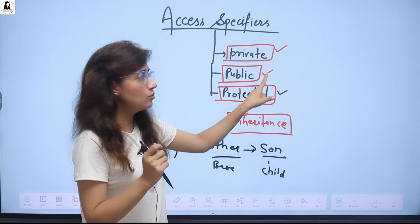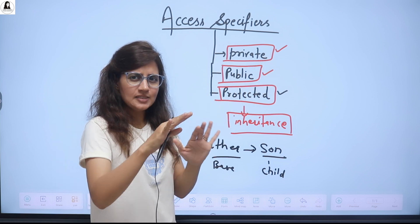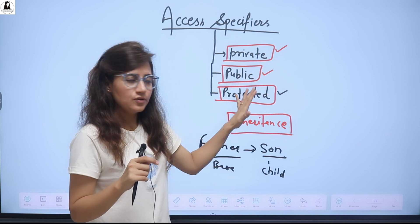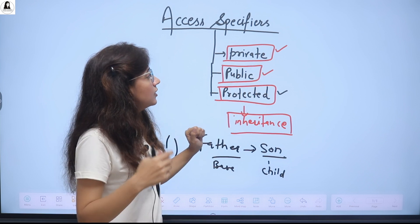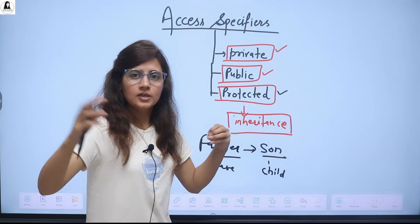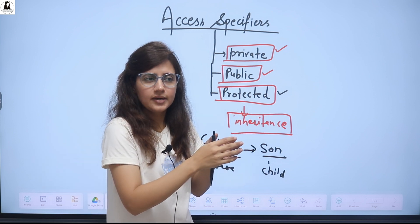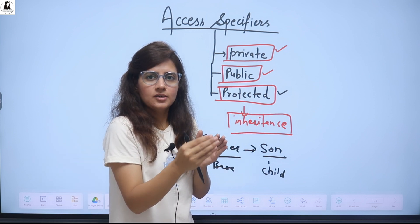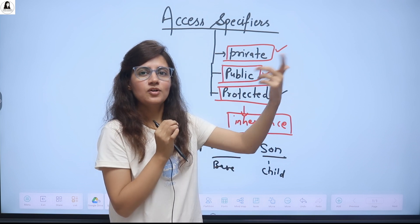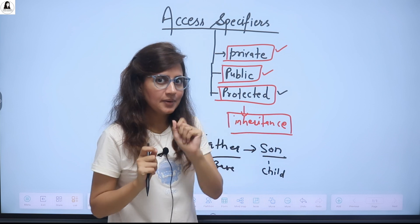For now, public we have discussed. I will show you private access specifiers with the help of an example. The basic idea should be clear — what is private, why we use private, what is public, and what is protected. Sometimes, if we want our data to be more secure so that not everybody can access it, we make it private. And there are some public methods in the class through which we can access those private members. Let me show you practically, then you will understand better.